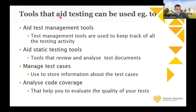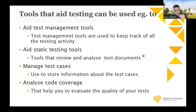The first sub-type is test management tools, which are used just to manage the activities of the software testing process from beginning to end. Some tools used for project management also fall under this category. Another sub-type is static testing tools — for example, to review and analyze documents. Even Microsoft Word can be used as a supporting tool for reviewing and analyzing documents.